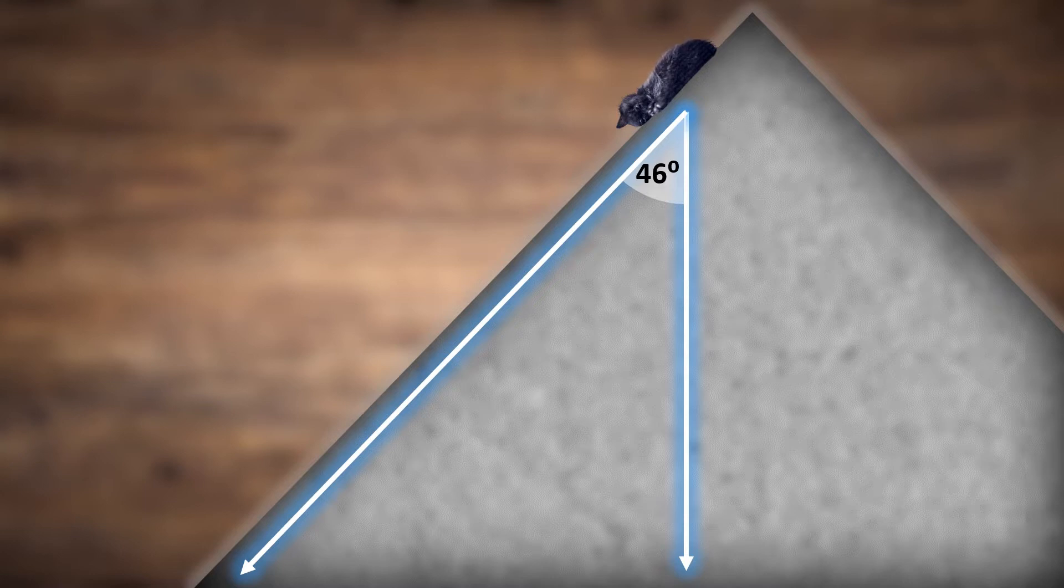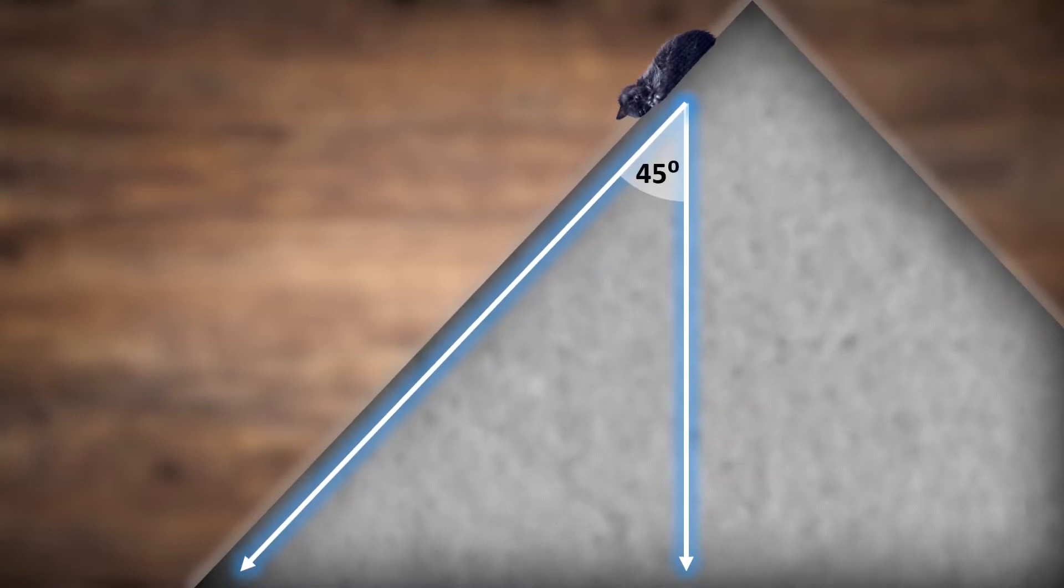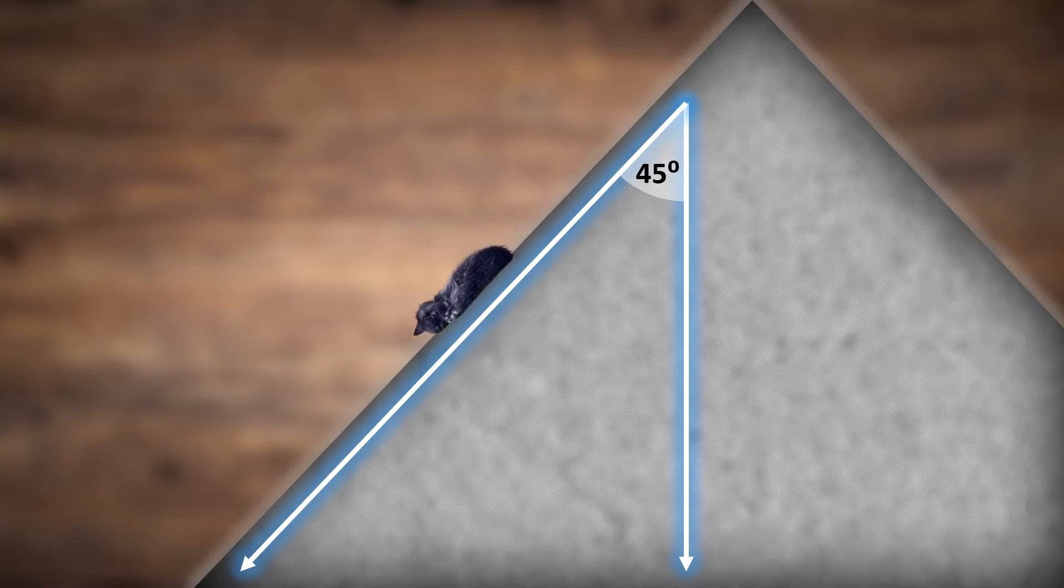Because at a 46 degree angle, the kitten is just stable enough not to fall. This is the angle of repose. Because if we increase the steepness by one degree, the kitten's friction will fail, it'll lose its stationary status and slide down the platform.